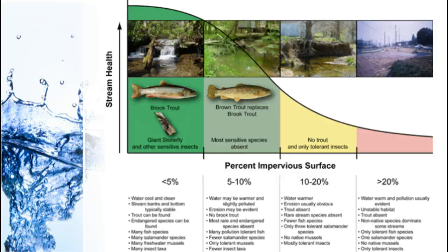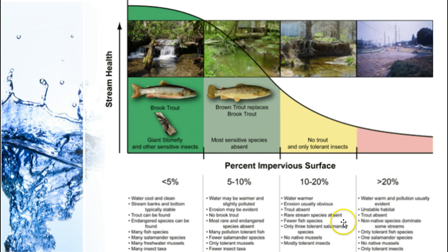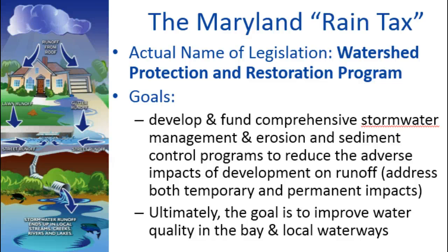Impervious surfaces are a very bad thing for so many reasons. You're concentrating runoff and pushing it into areas where it wouldn't normally be, and there's a direct correlation to ecosystem health. You can see that as the percent of impervious surface covering an area increases, biodiversity in the area dramatically decreases. Lots of other things happen too — water starts to become warmer, you have more erosion, more pollution because it's all getting concentrated.